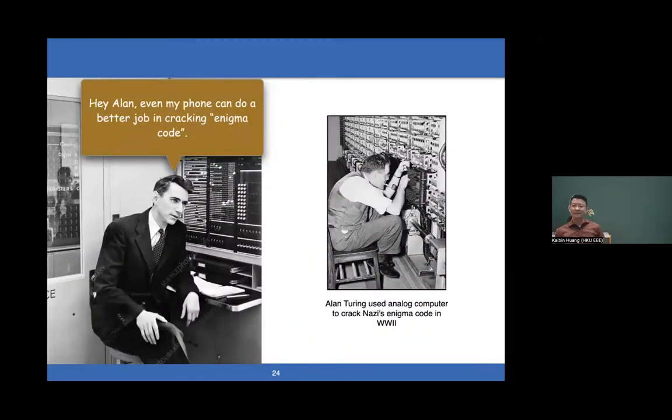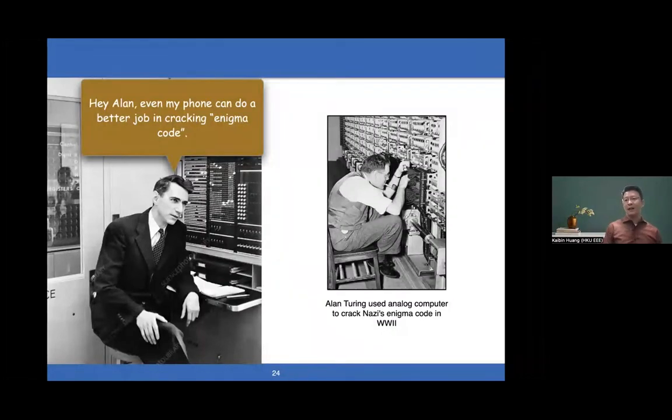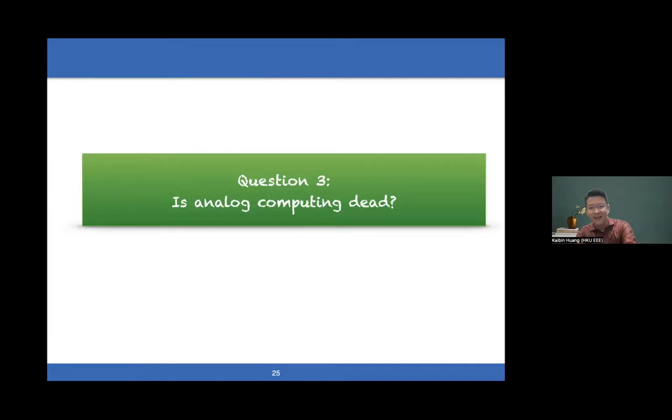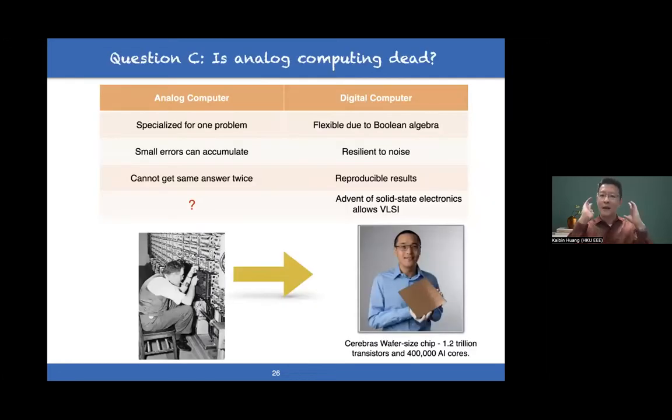Therefore, this idea suggests that it's possible that for 6G, we can have some kind of connectivity for edge intelligence called low-latency unreliable communications. And that's something interesting to think about. That also provides the answer to the second question I asked just now: Is reliable communication necessary or not? Probably not always. I want to shift here and talk about computing. Look at this photo: the right-hand side is an analog computer. What do you think Shannon will comment? He probably would say something like, 'Hey, ENIAC, even my phone can do a better job at cracking Enigma code. It is digital.' So I need to ask the third question: Is analog computing dead?